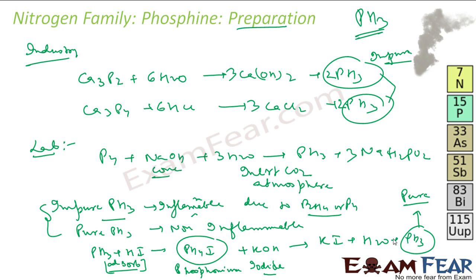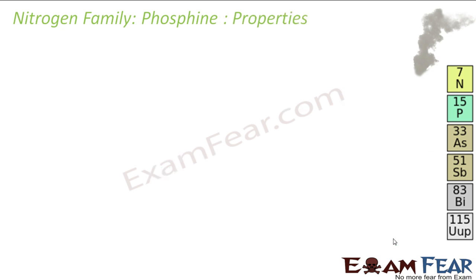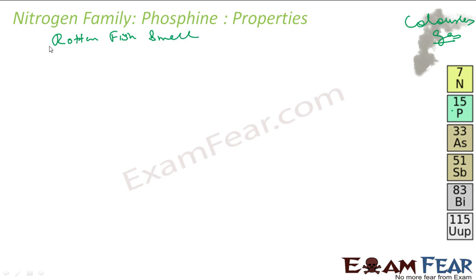Talking about the properties of Phosphine: it is a colorless gas. It has a rotten fish smell — a very bad smell. It is also highly poisonous.